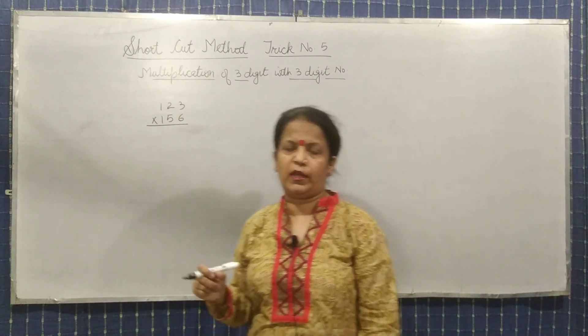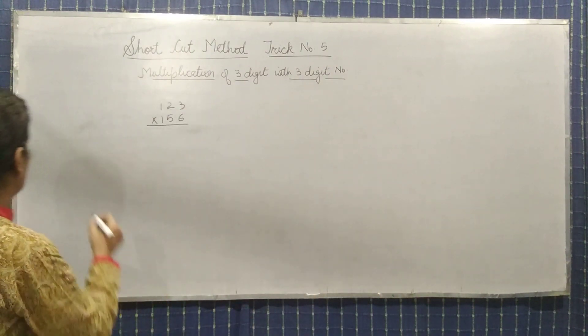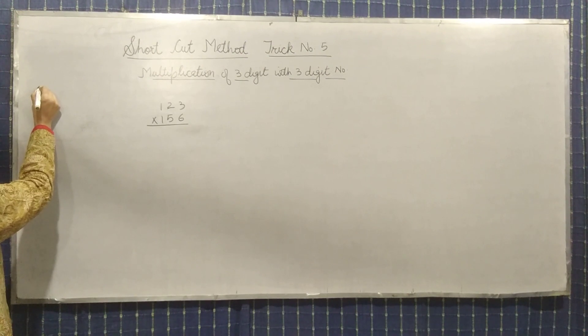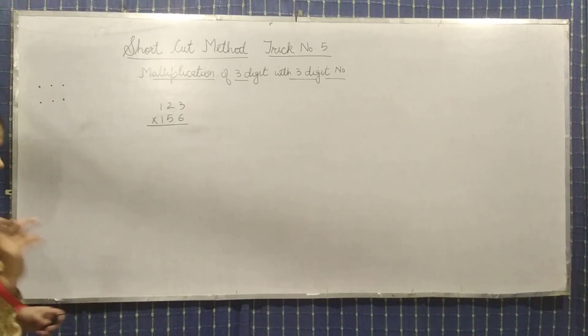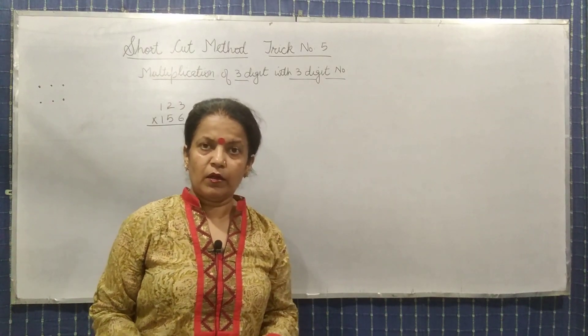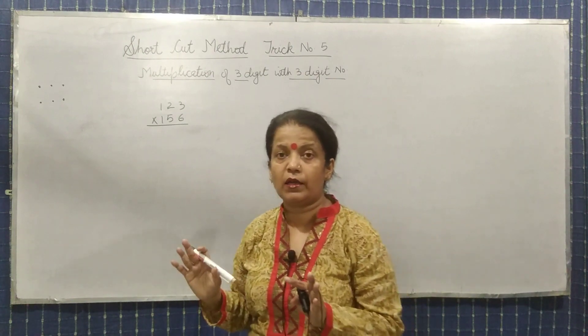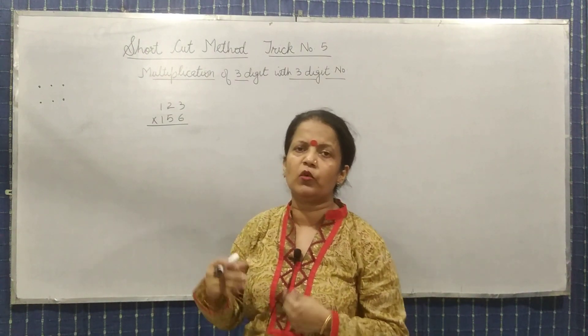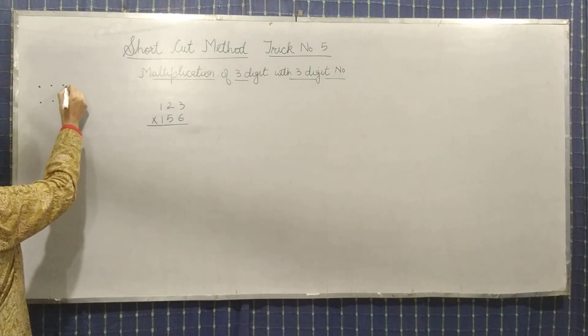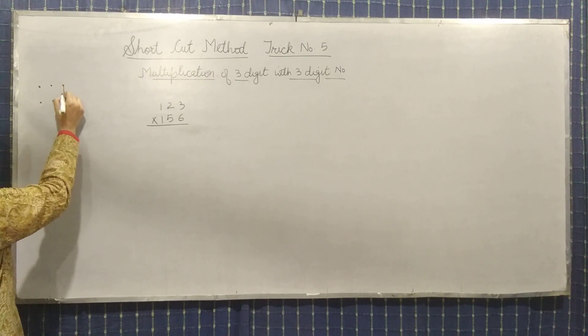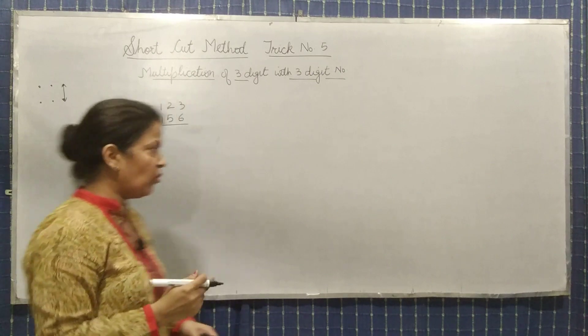First, we will see the concept which we will use. Suppose these are your 3 numbers. There are 5 steps which you have to follow. Don't worry about the 5 steps - they are very easy and if you practice, it will become clear. As in the previous tricks, I told about vertical, crisscross, vertical. Same thing over here.